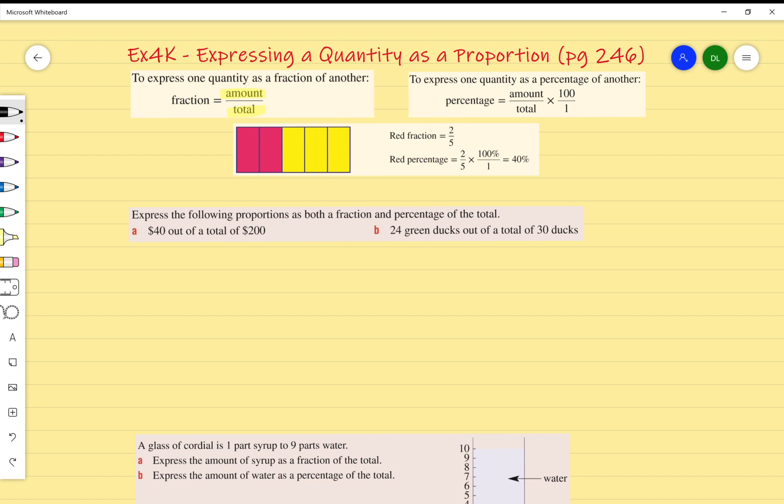If we look at the bottom here, we've got a red fraction. It's asking: what fraction of this whole rectangle is red? The amount of red mini rectangles would be 2, whereas the total number of mini rectangles is 5. So my red fraction ends up being 2 over 5.